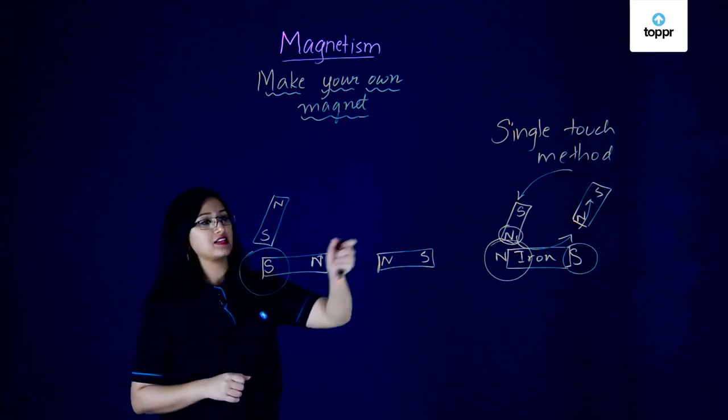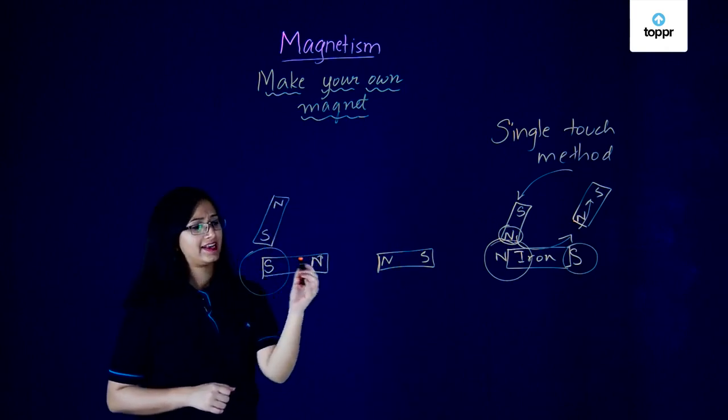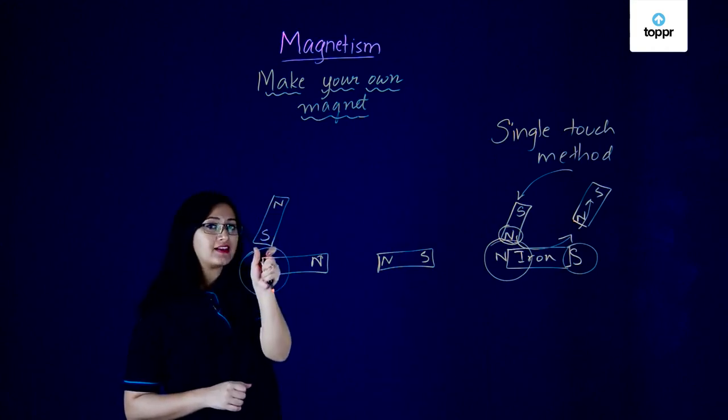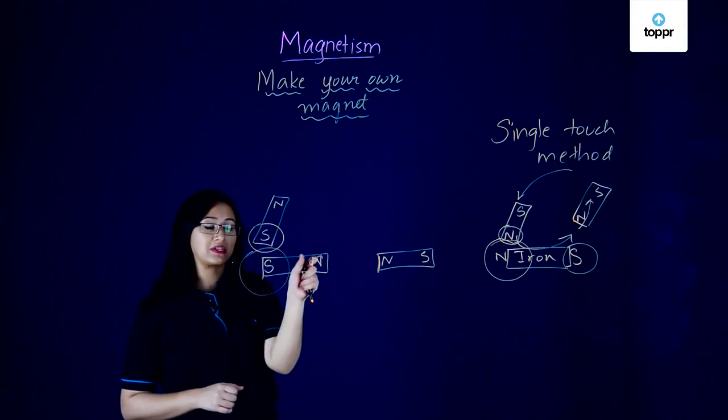Using the single touch method, the end where you're hitting or striking the material first will have the same pole as the point by which you're striking the magnetic material.